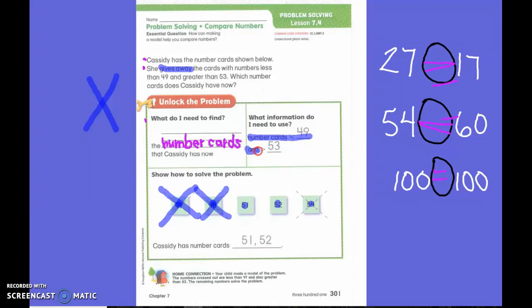Then it says and greater than 53. I've already crossed these two out so I don't have to worry about them. But I'm going to start here. Is this greater than 53? No. No.